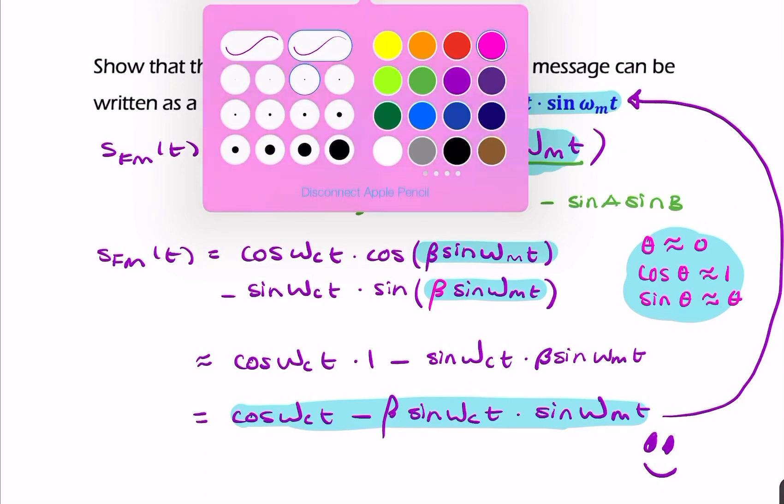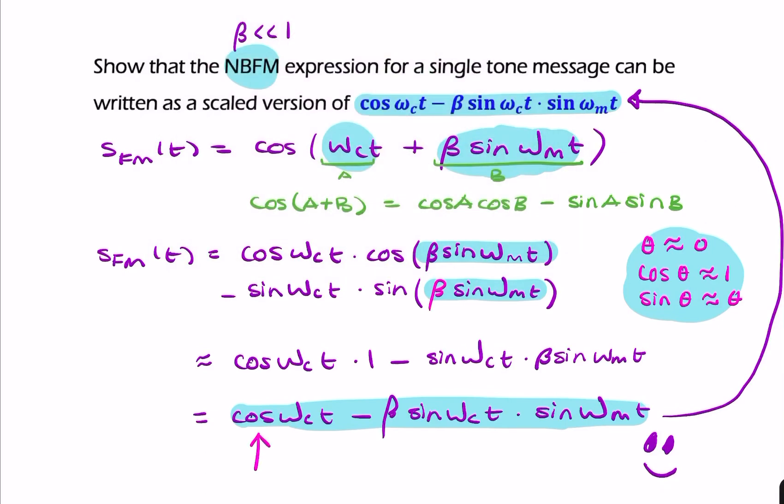If you look at it, you have the cosine carrier term and the sidebands here - your upper and lower sidebands. Here you have your message multiplied by a sine, which is 90 degrees or π/2 radians out of phase with the carrier.